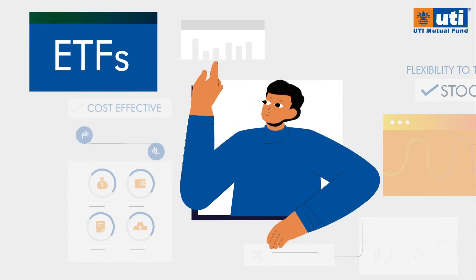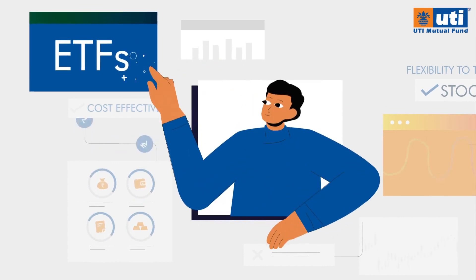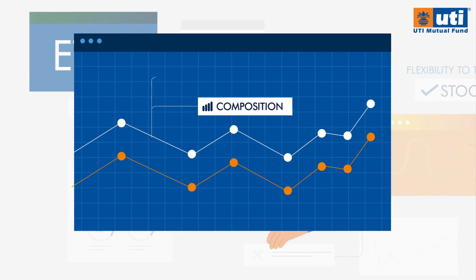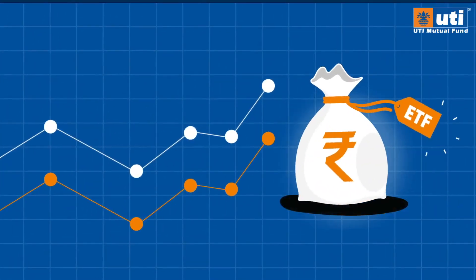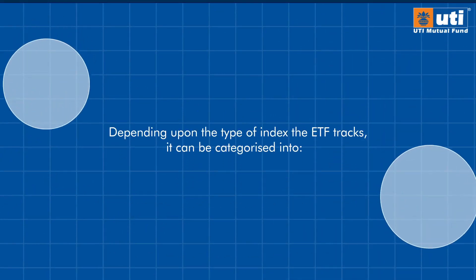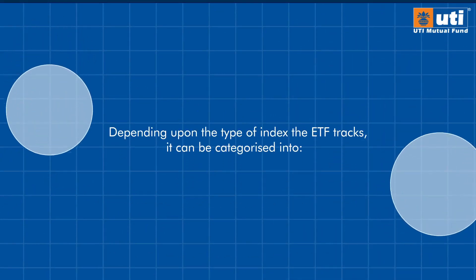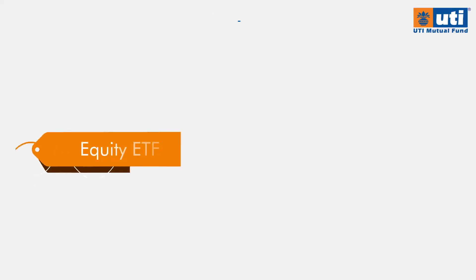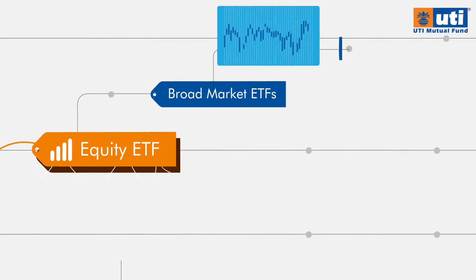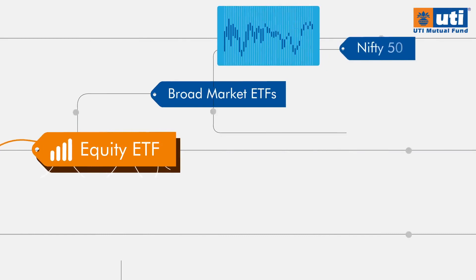Exchange-traded funds, or ETFs, passively track a market-wide index in terms of composition as well as weightage, with an aim to offer index-like returns. Depending upon the type of index the ETF tracks, it can be categorized into Equity ETFs — Broad-market ETFs based on broad market indices like Nifty50, Sensex, etc.